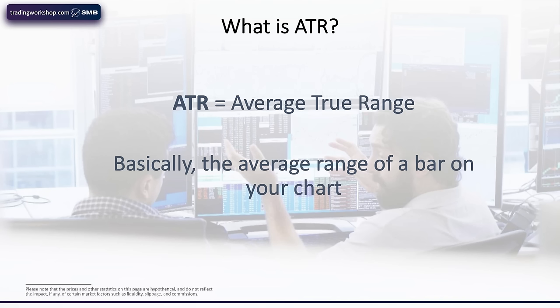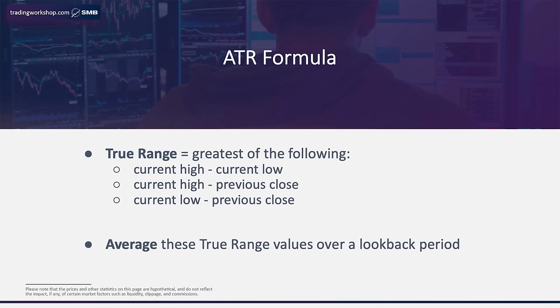So if you're looking on a daily chart and there's a big gap, that ATR is going to include that gap in the range. ATR equals average true range — basically the average range of the bar in your chart. The formula: the true range is just the greatest of either the high or the low of the bar, or the gap to the high or the low of the bar. Then we just take an average of these things — that's how we construct the ATR. Here's a visual representation of ATR — this is a chart of Microsoft during breaking news. You can see the range dramatically expands midday.